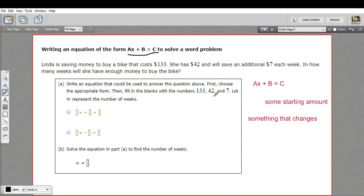And in a problem like this, there's always some starting amount, and that is going to go where the b is, some constant number, some beginning point. And then there's always something that changes, and that's going to go where the a is.